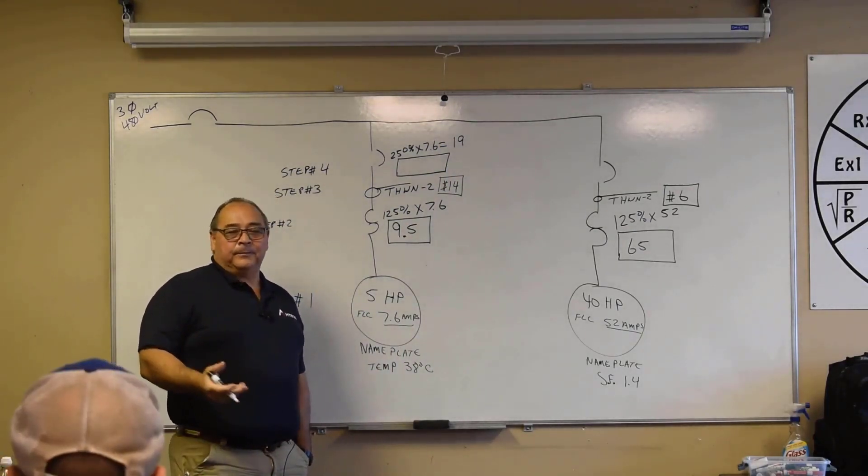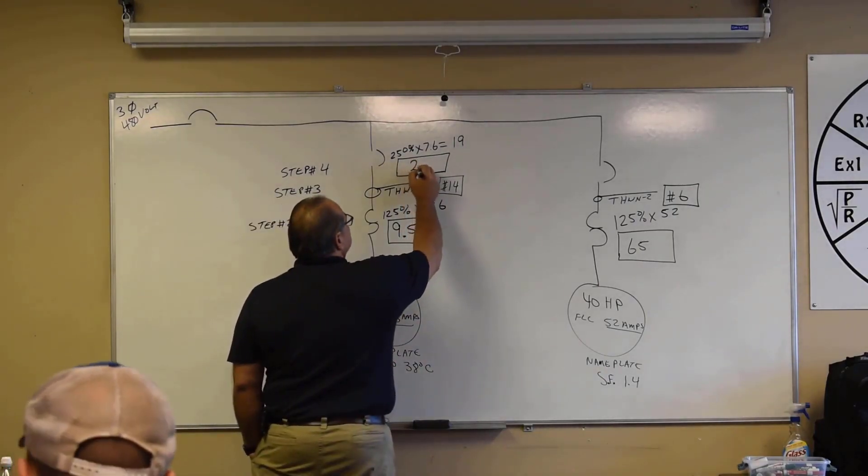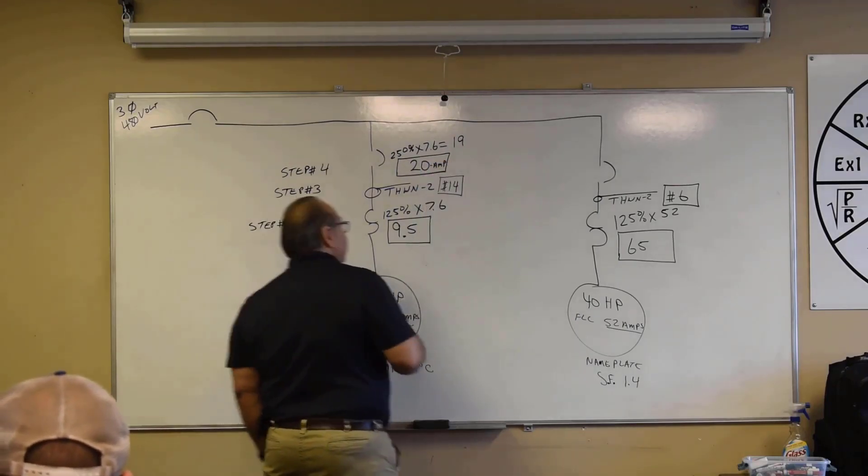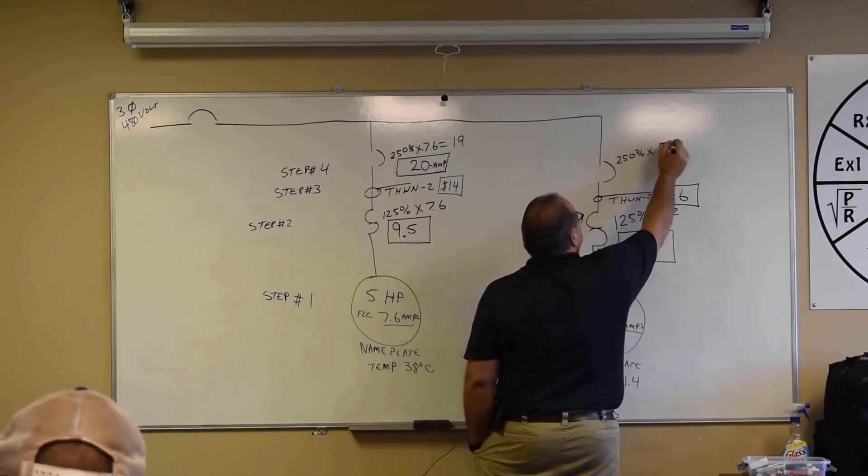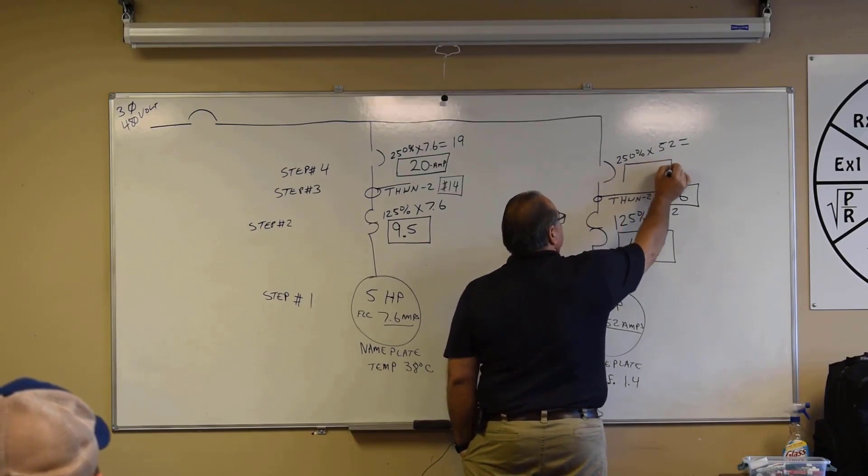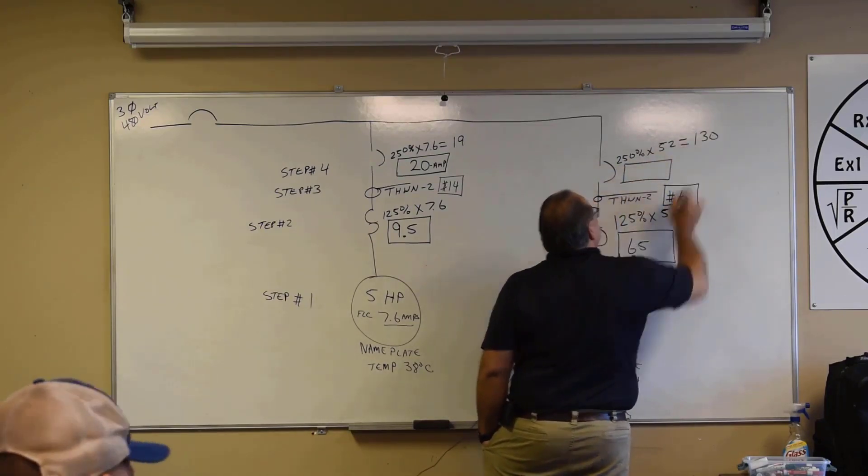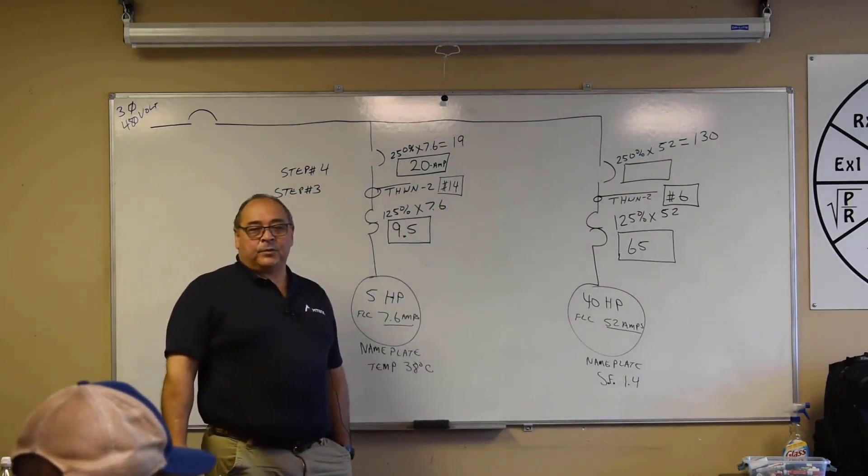Go to the next size up, which is 20 amps. Okay, over here we're going to be using that 250 percent again. We're going to multiply that times our full load current, 52 amps, right? What's that equal? 130, even. There's 130, not a standard fuse or circuit breaker size. So what we're going to do? Go to 150 amps.